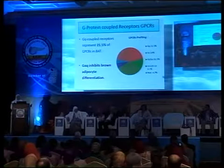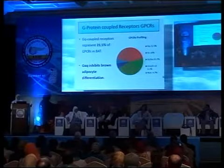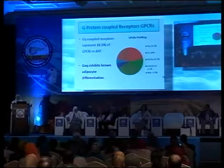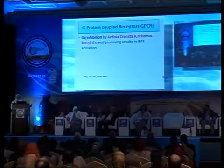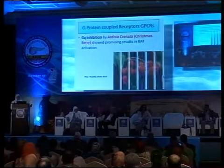Another important field of study involves G-protein coupled receptors. These receptors have Gq subunits representing 21.5% of receptors in brown adipose tissue, and they inhibit brown adipose tissue. Inhibiting them using a plant called Ardisia crenata, the Christmas berry, shows promising results for activation of browning. The future for combating obesity and diabetes is complicated, but may be as simple as fasting — fasting inhibits PPAR-gamma expression in white adipose tissue, reducing fat accumulation and promoting life extension.